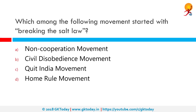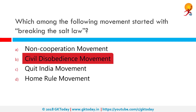Which among the following movements started with breaking the Salt Law? The Salt March or Dandi March was a non-violent march led by Mahatma Gandhi. It lasted from 12 March 1930 to 6 April 1930 as a direct action campaign of tax resistance and non-violent protest against the British Salt monopoly. It gained worldwide attention, giving impetus to the Indian independence movement and starting the nationwide Civil Disobedience Movement. So the answer is option B, Civil Disobedience Movement.